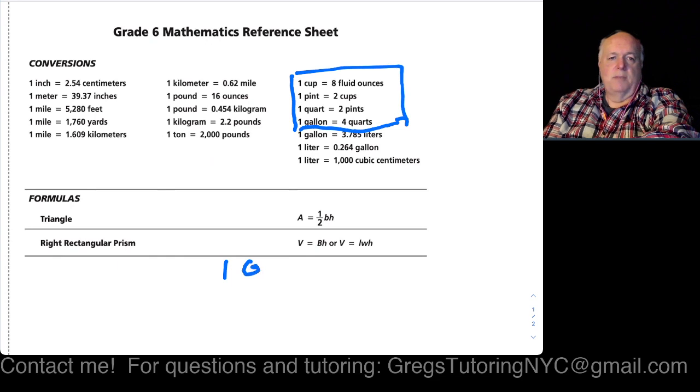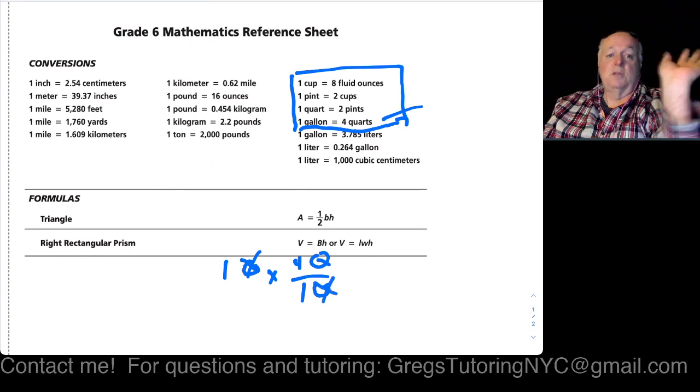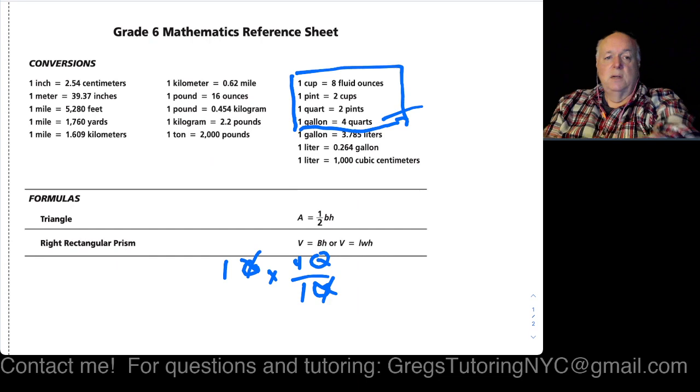We need to get pints, so what we're going to do is we have one gallon and we can't go directly to it, so we're going to bring it to quarts first. We want to multiply it, so one gallon we want to put that at the bottom as four quarts because we're going to cancel out the actual unit. I'm crossing out the gallon there, that cancels the gallon on the denominator. Now I'm left with quarts.